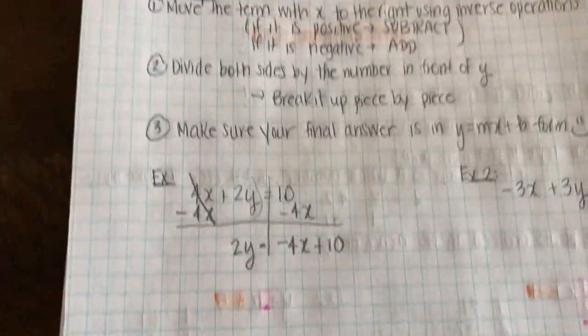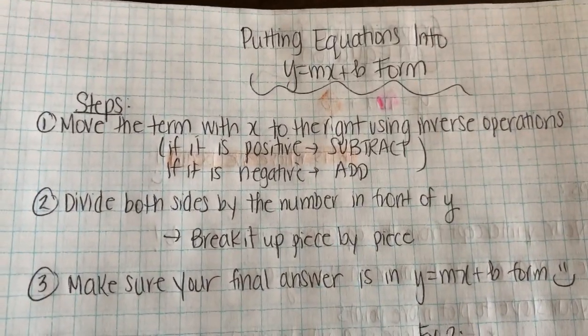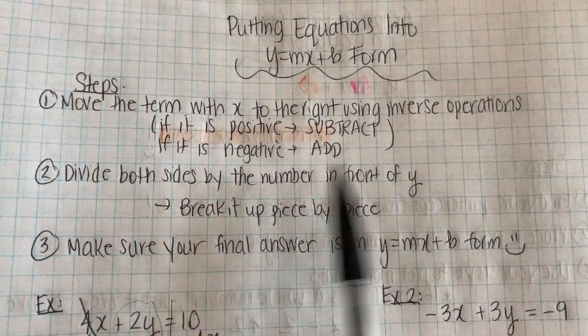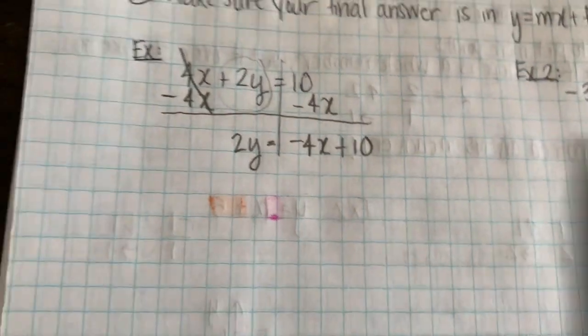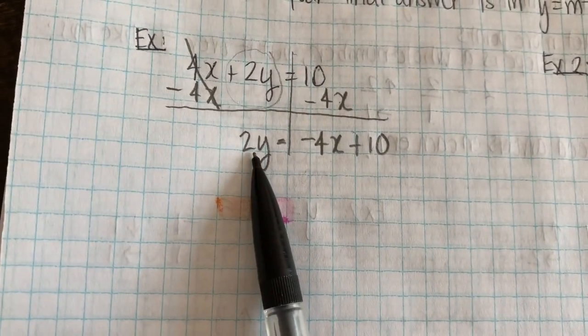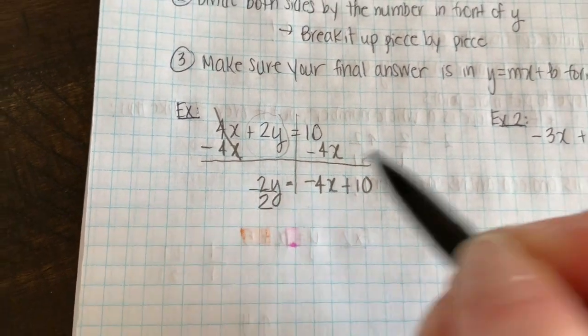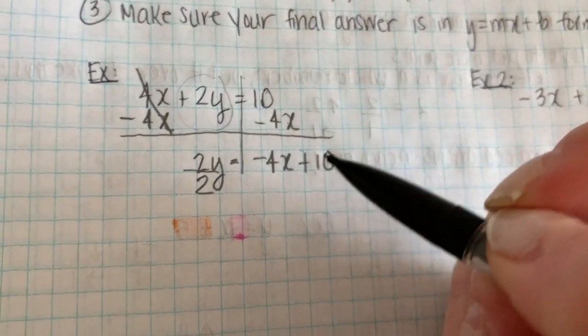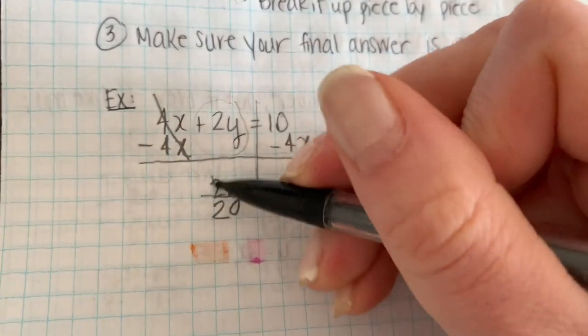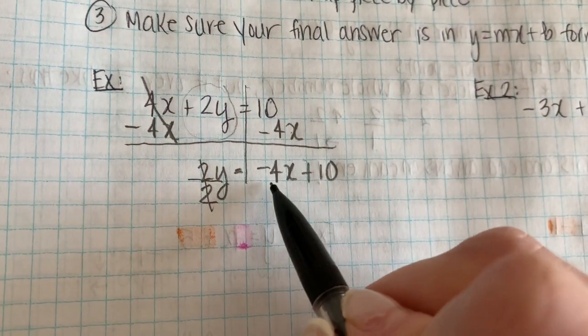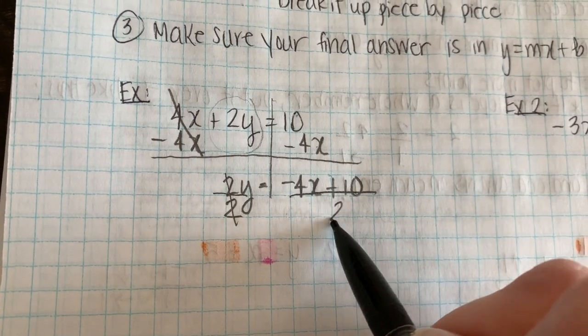So we're one step closer to having y equals mx plus b form. Step 2 is to divide both sides by the number in front of y. So as you can see, the number in front of y here is 2. So I'm going to divide both sides by 2. Because remember, the goal is to get y by itself. 2 divided by 2 is 1. So that will leave me with just y. But what I do to one side, I have to do to the other side.